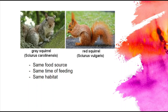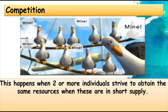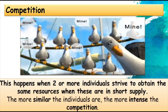If there's a slight difference — for example, if both ate seeds but the red squirrel could also eat fruit — then the red squirrel would probably be able to survive because it had another food source. But because it didn't, the niche overlapped too much with the gray squirrel. When two or more individuals strive to obtain the same resource when it's in short supply, that leads to competition — and the more similar the individuals, the more intense the competition.